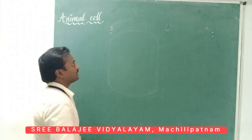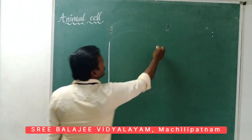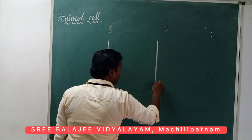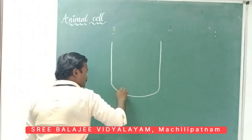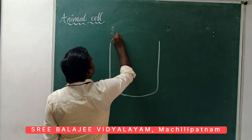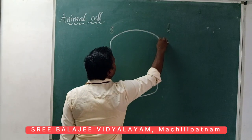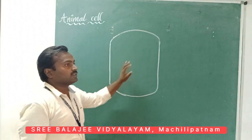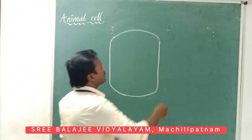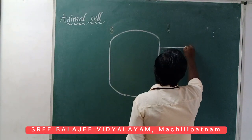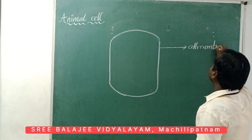Now I am going to draw the diagram of animal cells. In the case of animal cells, we can see only a single layer. That single layer is called the cell membrane. This is the cell membrane. This cell membrane is also called the plasma membrane.